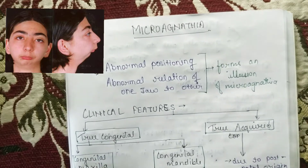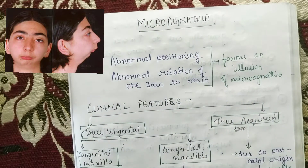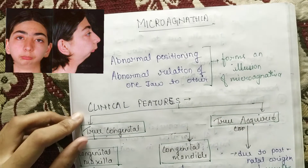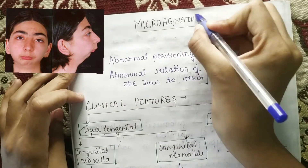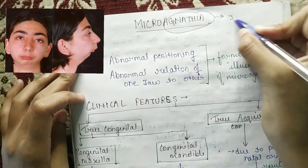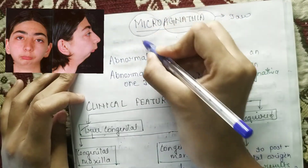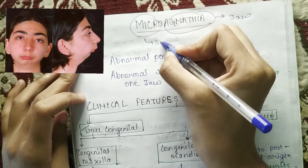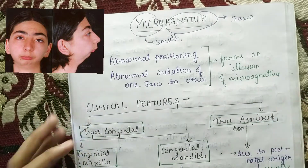Hello everyone, welcome to STEM — that is Study, Art, Motivation and Education. In this video we are going to discuss about micrognathia. Agnathia means jaw, and micro means small, so you understand that micrognathia means the jaw is small.